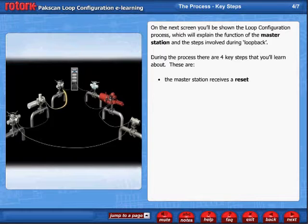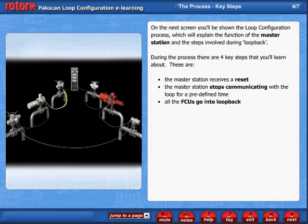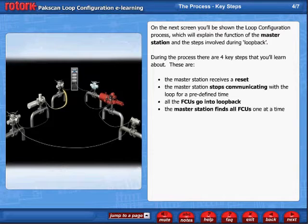These are: the master station receives a reset; the master station stops communicating with the loop for a predefined time; all the FCUs go into loopback; and the master station finds all FCUs one at a time.